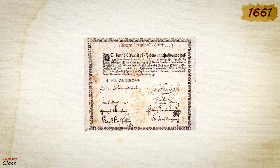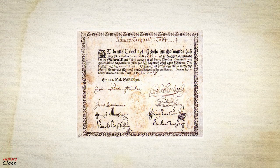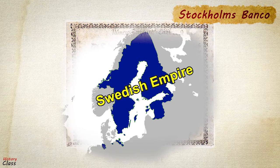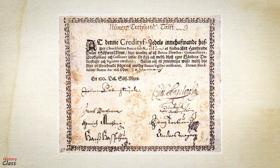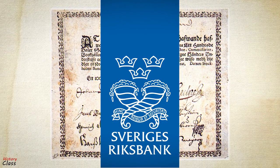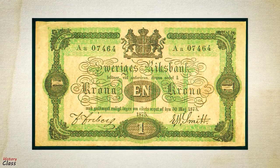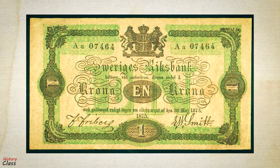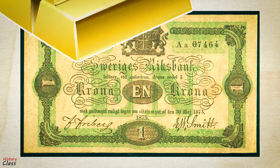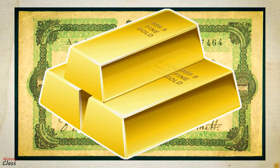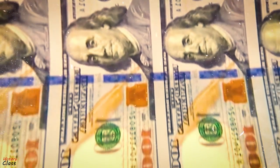In 1661, the first European banknotes were issued by Stockholm's Banco, a predecessor of Sweden's central bank, Sveriges Riksbank. These banknotes were a form of representative money which could be converted into gold or silver by application at the bank. Since banks issued notes far in excess of the gold and silver they kept on deposit, a sudden loss of public confidence in a bank could precipitate mass redemption of banknotes and result in bankruptcy.